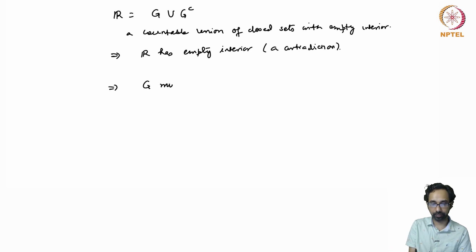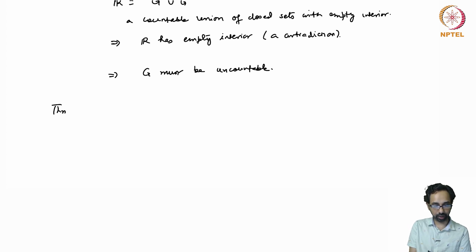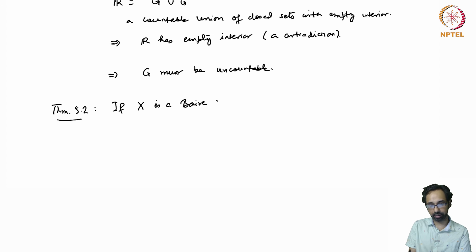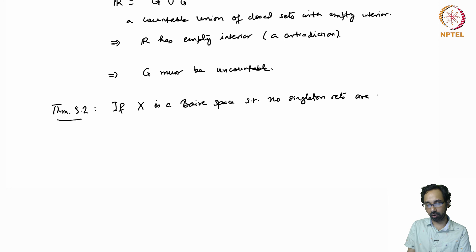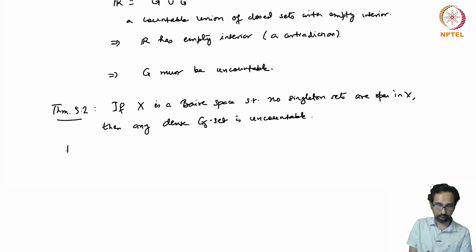Therefore G must be uncountable. With essentially the same proof, we can prove a more general theorem: if X is a Baire space in which singleton sets are not open, then any dense G-delta subset of X is uncountable. This has the same proof as above.